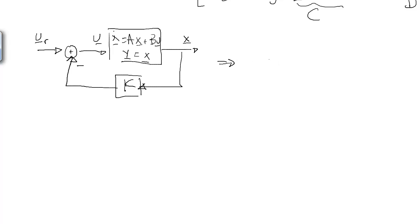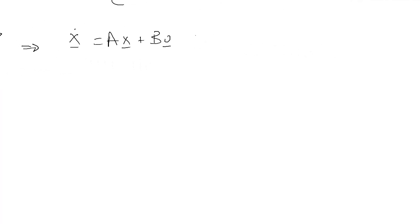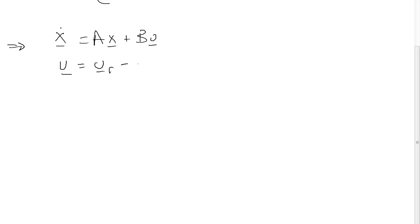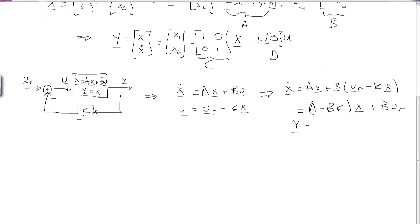Writing this all out, x dot equals AX plus BU, but U equals UR minus K times X. Upon substitution, x dot equals AX plus B times (UR minus KX). Multiplying out and collecting terms, I end up with (A minus BK) times X plus B times UR. And we still have y equals x. This is the closed-loop state-space representation of our system.